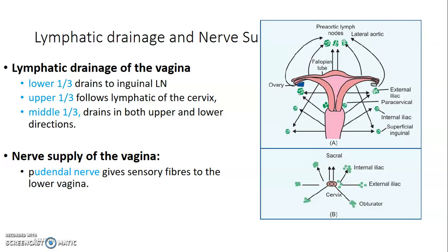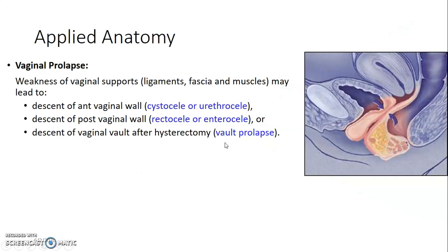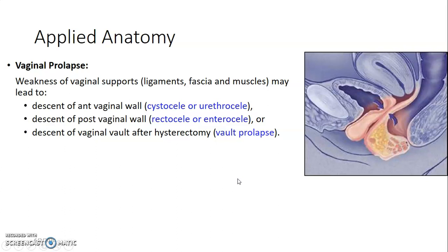The vagina is supplied by the pudendal nerve that gives its sensory fibers. Vaginal prolapse occurs when there is weakness in the ligaments, fascia, and muscles that support the vagina. If the anterior vaginal wall prolapses, you can have a cystocele or urethrocele — herniation of the bladder through the anterior wall. If the posterior wall is weakened, the rectum can herniate into the vagina, forming a rectocele. After hysterectomy, vault prolapse can occur where the remaining stump collapses through the vagina.